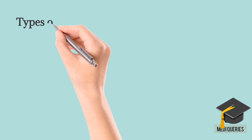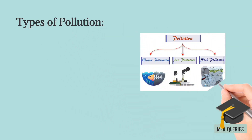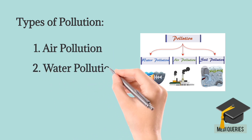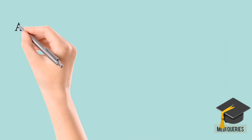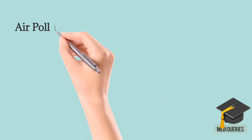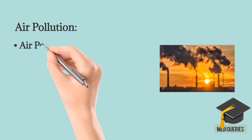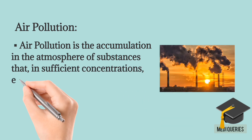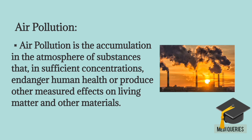Different kinds of pollutions are: Air Pollution, Water Pollution, and Land Pollution. Air pollution is the accumulation in the atmosphere of substances that, in sufficient concentration, endanger human health or produce other measured effects on living matters and other materials.